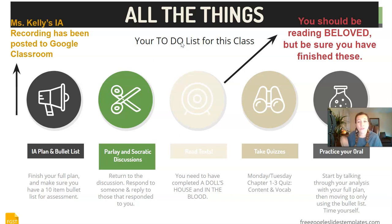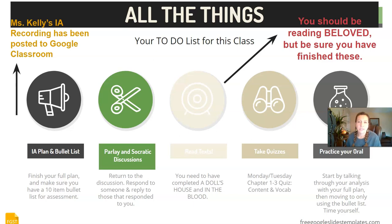A couple reminders about what's still up in the air. Some of you still have an IA to finish — don't forget that if you haven't submitted that to Empower, you need to do that, as that score counts towards your grade. Also, if you have not completed the Parlay and Socratic discussions, please do that. The Socratic discussion we had in class, but if you weren't there or you missed it or you didn't speak, you can still send me some responses for credit. We are currently reading Beloved, but you should have finished A Doll's House and In the Blood — be sure you've completed those quizzes as well. I know this can feel like a lot, so just take it a piece at a time.